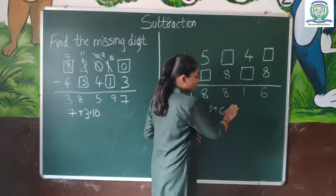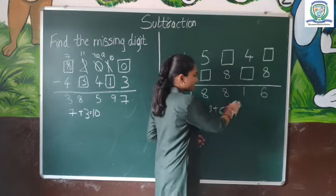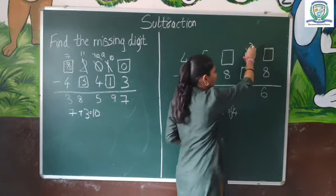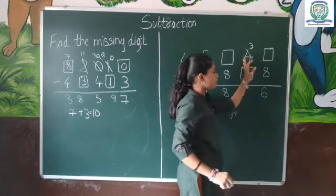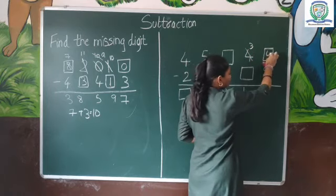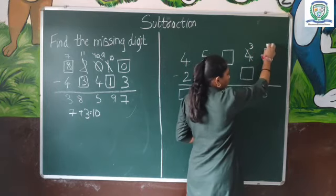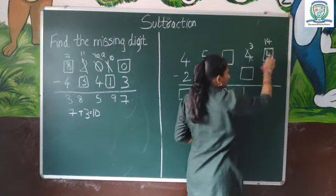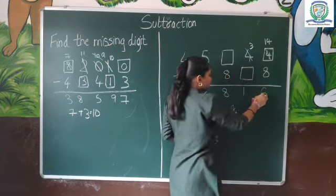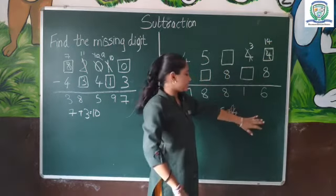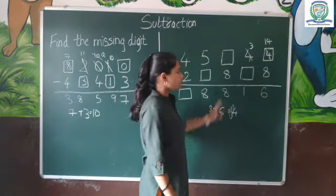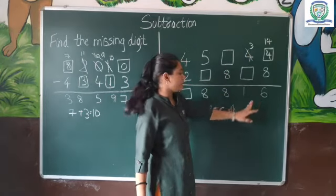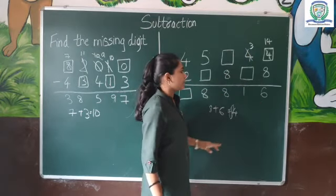Fourteen. Now, the number 1 is equal to 4. So this one is equal to 4. This one is equal to 7 and 6. The number 1 is equal to 6. So this is another number.